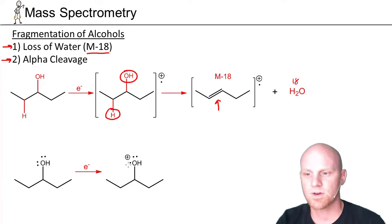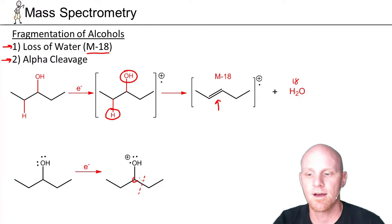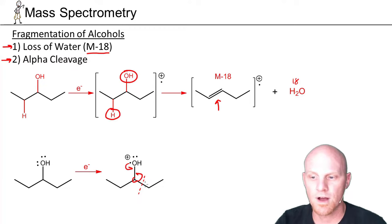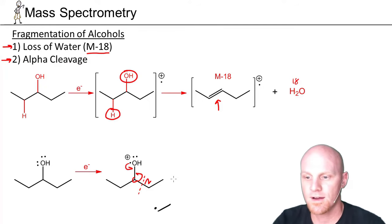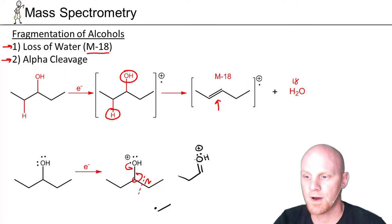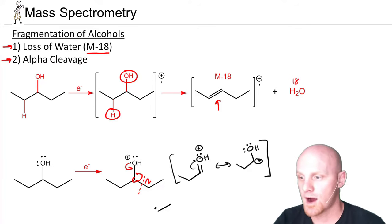The second fragmentation is alpha cleavage, as we saw with halogens. The carbon bonded to the alcohol is the one to focus on — we want to break adjacent to it. We'll form half the bond here and the other half from here to form a carbon-oxygen double bond, leaving a radical on one side. This forms a carbon-oxygen double bond with a positive charge on the oxygen, which is resonance-stabilized — we can kick the electrons up, leaving a carbocation with the positive charge shared between both the oxygen and the carbon, forming a resonance-stabilized cation. That's why alpha cleavage is so common for alcohols.